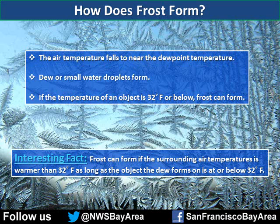One question asked by a Facebook follower of the Eureka National Weather Service office was: how does frost form? First, the air temperature needs to fall to the dew point temperature. This allows dew or small water droplets to form. If dew forms on an object that is at or below 32 degrees, frost will form. One interesting note is that frost can form even if the air temperature is above 32 degrees, as long as the object it forms on is at freezing.